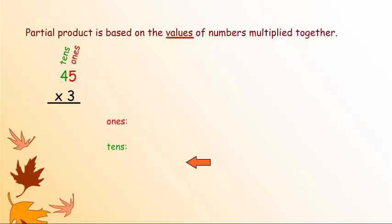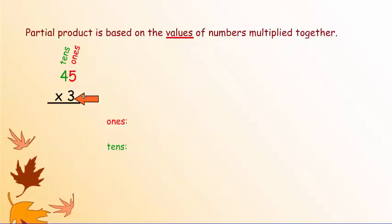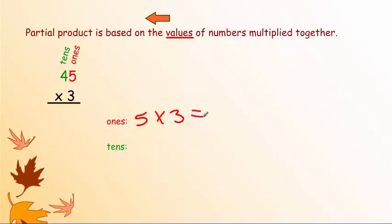Let's take a look at another problem: 45 times 3. We're going to look at the values of the ones place and then the tens place. Each digit must be multiplied times this 3. Let's do the ones place first. On your paper, you won't have 'ones' or 'tens' written — that's up to you to write. The ones place: 5 times 3. Write that next to 'ones.' Now write its value — what is 5 times 3? It is equal to 15.